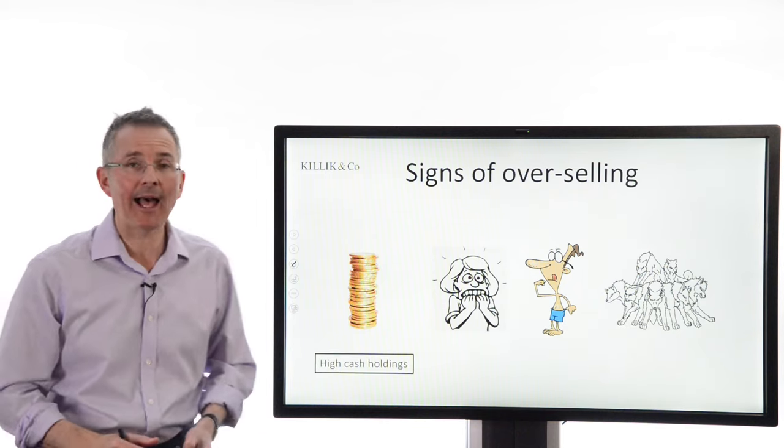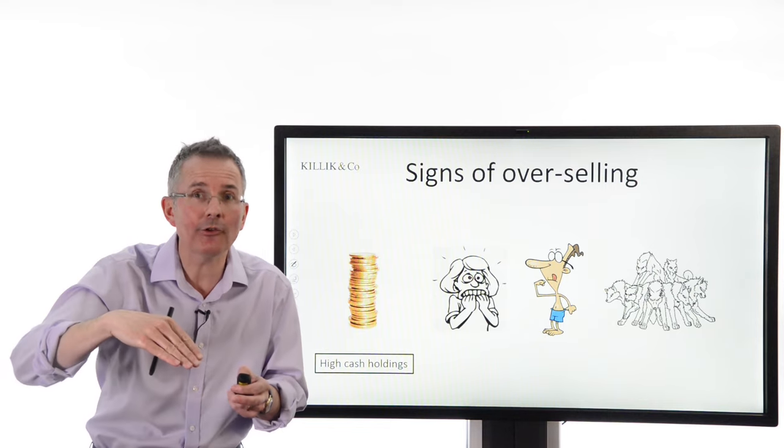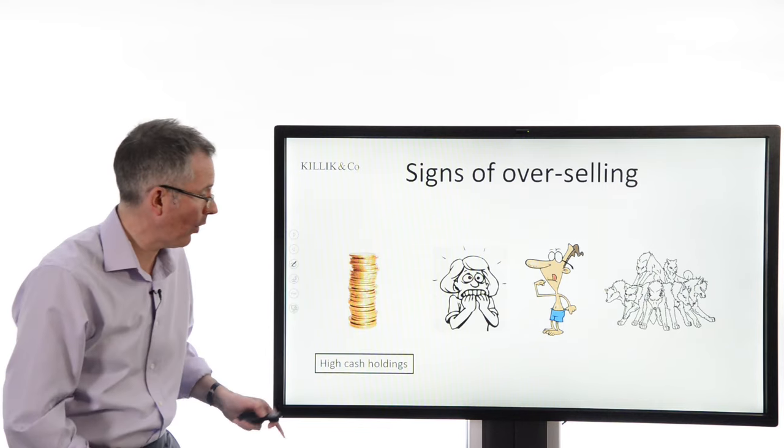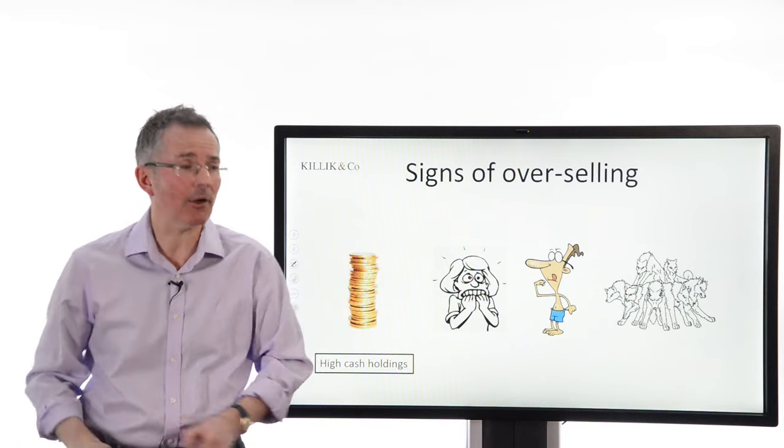Now, you can reverse that. What about when you think, I want to get in. Everyone's too pessimistic, too bearish. Now's the time to buy. A contrarian would look for high levels of cash holdings. Everyone's scared. They've bailed out of equities, gone back to cash.